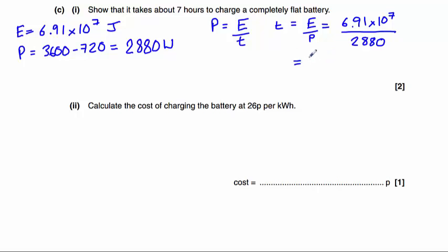That gives us an answer of 23,993 seconds. We now need to divide that by 60 times 60 in order to get that into hours, which gives us 6.66 hours, which is approximately 7.